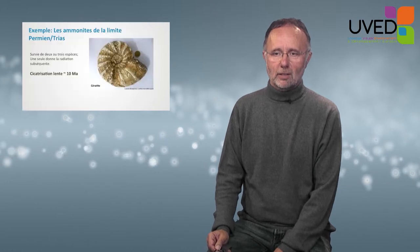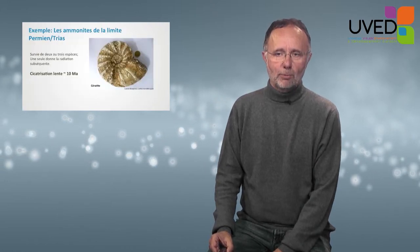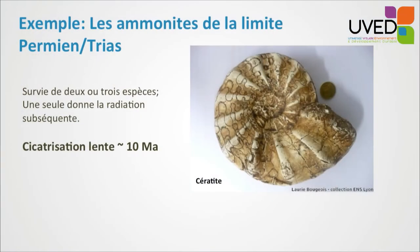How do we exit a crisis? Once the crisis is over, how have groups bounced back? How was this recorded? With ammonites at the limit between Permian and Trias — Paleozoic, Mesozoic, or primary and secondary era, just to keep it simple — we see the survival of only two or three species after the crisis, and only one species during the following crisis.